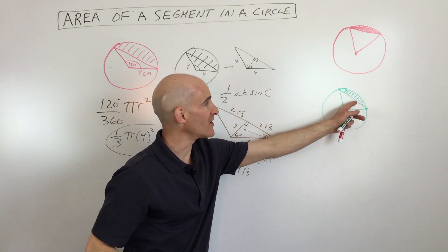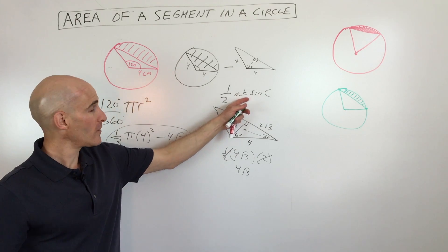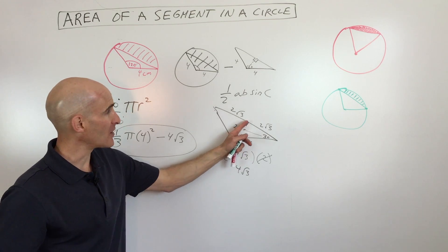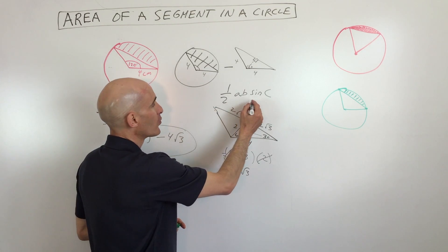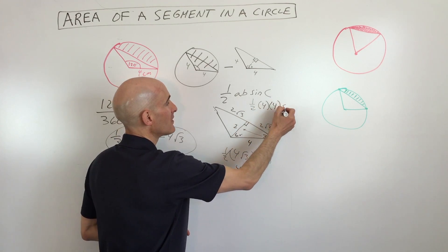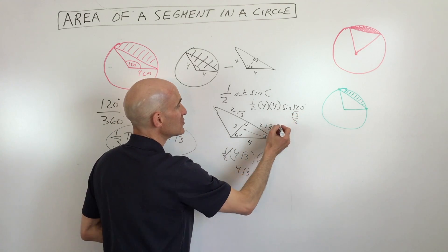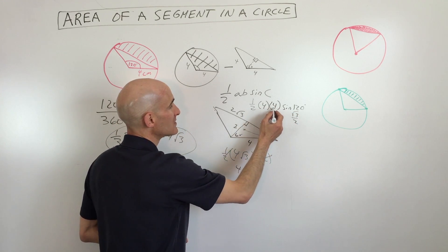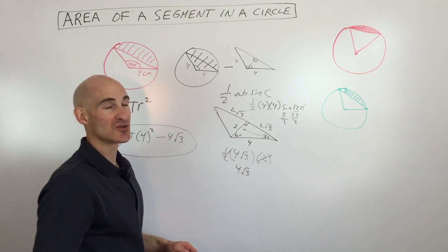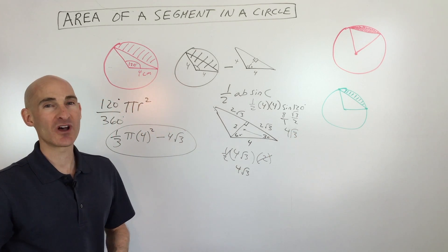You can either use this formula like I was mentioning before, or you can use the method of just splitting the triangle in half by dropping a perpendicular. Let's look at this real quick. This is one-half, 4 times 4, times the sine of 120. Sine of 120 is square root 3 over 2. This is going to give you 16 times one-half, which is 8, and you can see the 8 and the 2 reduce to 4 square root of 3. So either way you're going to get the same result. Whichever way you want to do it is going to work for you.